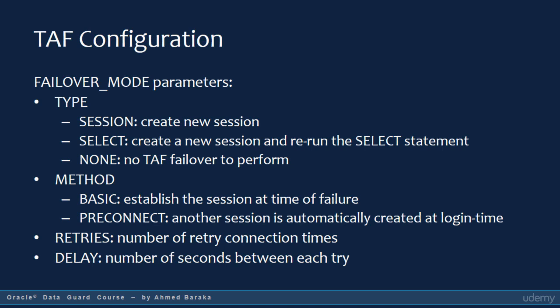The Method parameter controls how fast the failover should take place. It accepts one of two values: basic or pre-connect. Basic makes the client establish the failover session at time of failure. Pre-connect, on the other hand, makes the client create another session at login time. The Retries parameter specifies the number of times a client tries to connect after a failover. The Delay parameter specifies the number of seconds between each connection attempt.